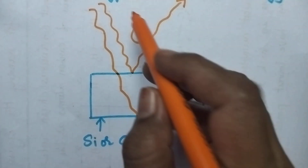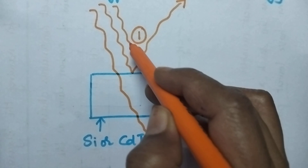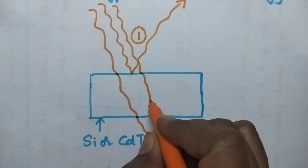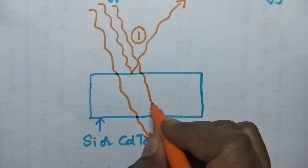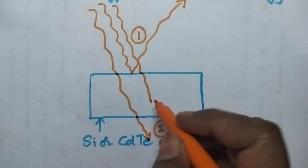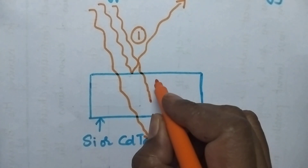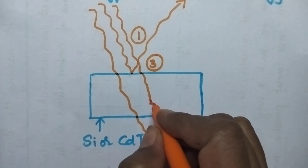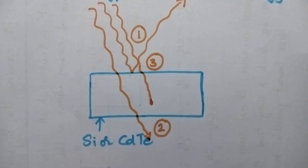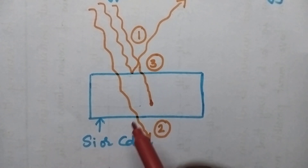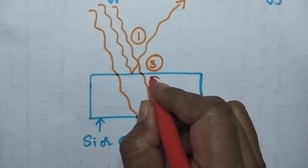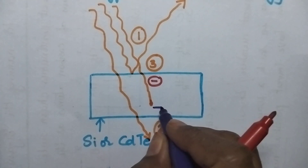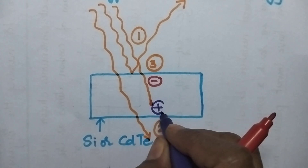And what is the third possibility? If the solar radiation is having sufficient energy, then it is capable of dislocating the electron present at that position. This is called the photoelectric effect. The electron which is already present at this position will be moved to the front surface.